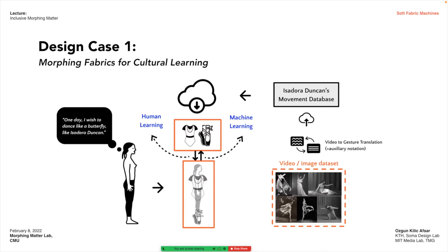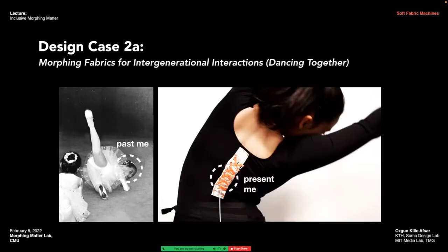One research question I started with is how morphing interfaces can help us learn new gestures and movements through kinesthetic feedback from fabrics with memory and artificial intelligence. Imagine a fabric ecosystem on a dancer that helps her dance like the famous American dancer Isadora Duncan — first learning about her motor skills, then generating customized kinesthetic feedback to different parts of her body, like her feet or upper body, to incrementally teach her Isadora's romantic dance culture. Or imagine a soft fabric machine that embodies our childhood self and enables us to access and dance together with her.